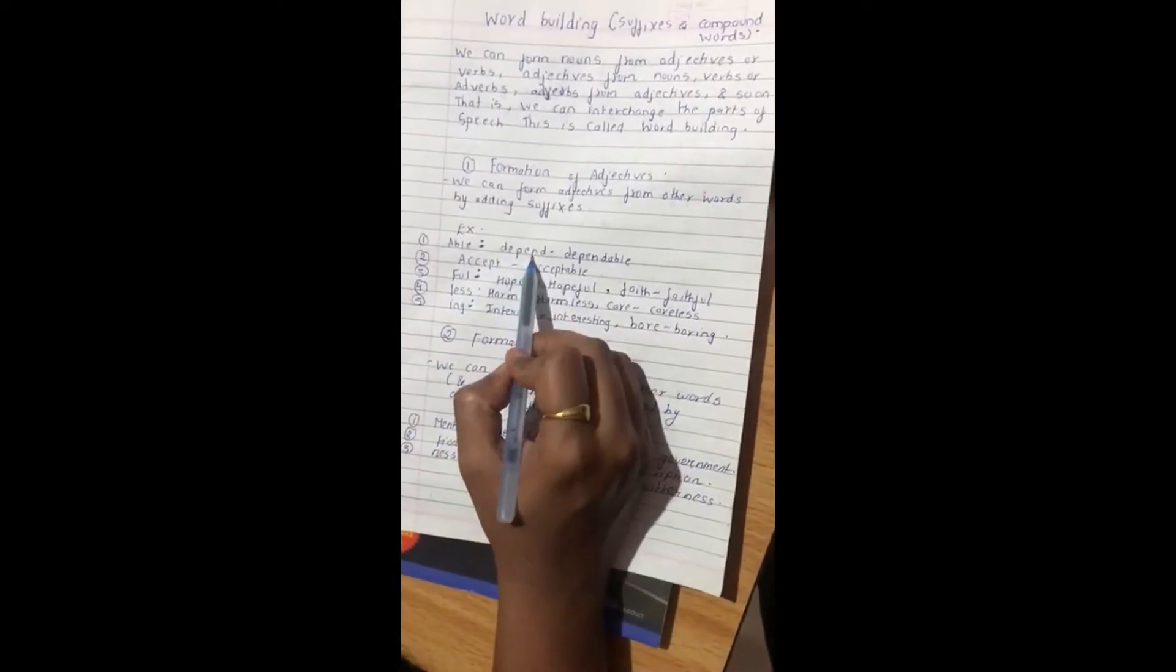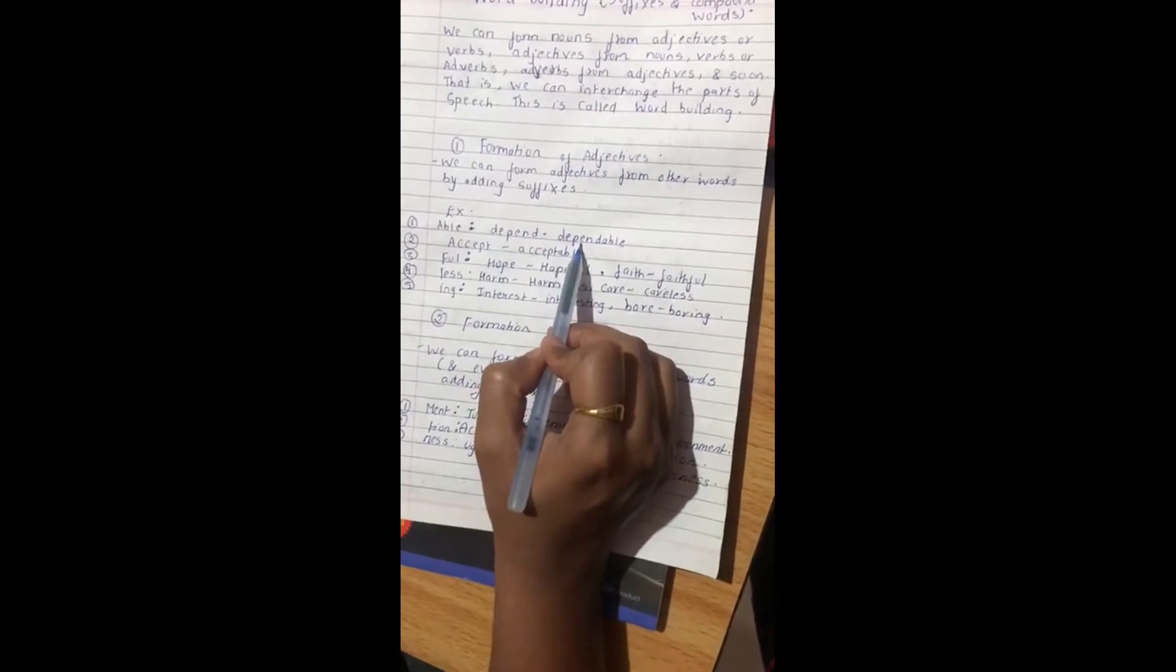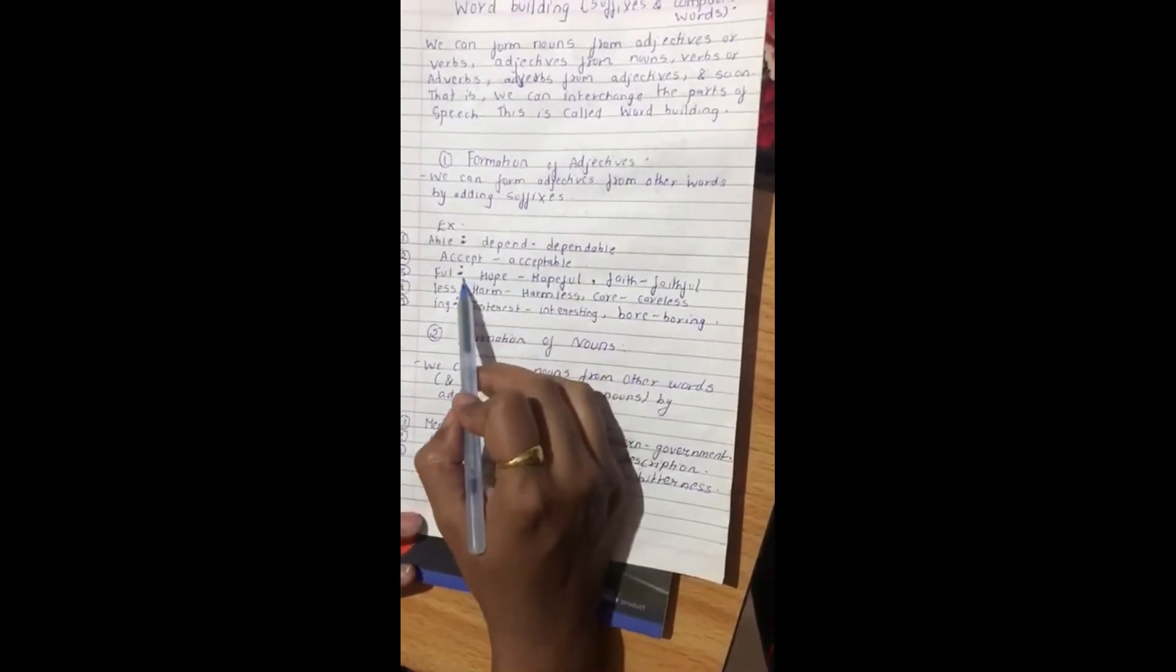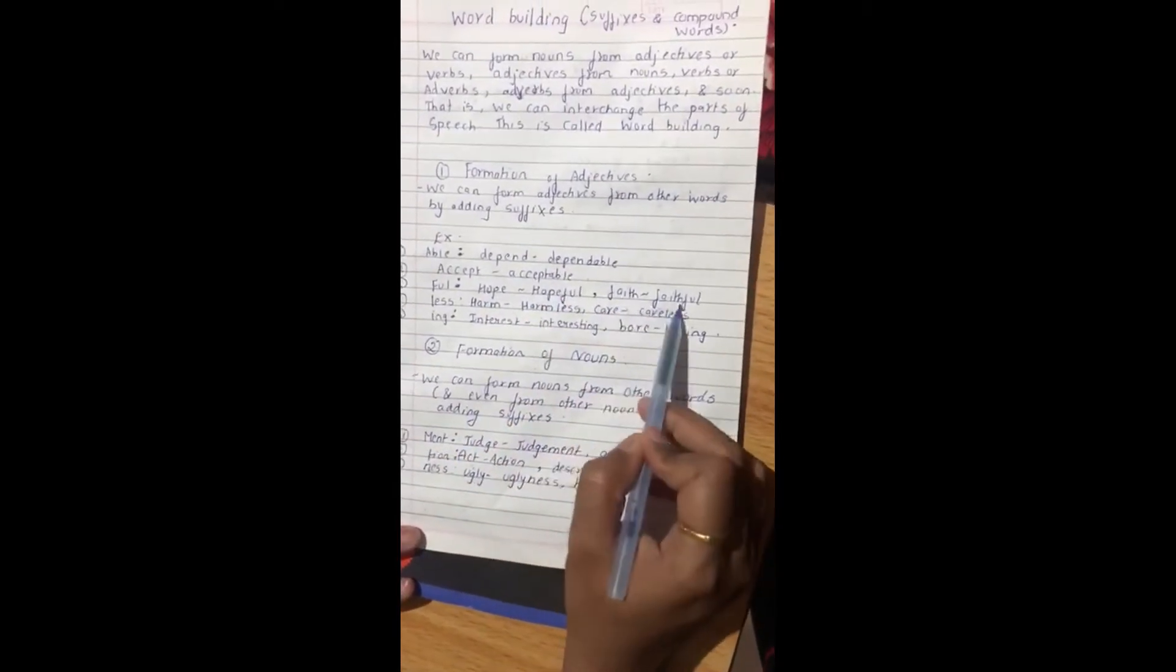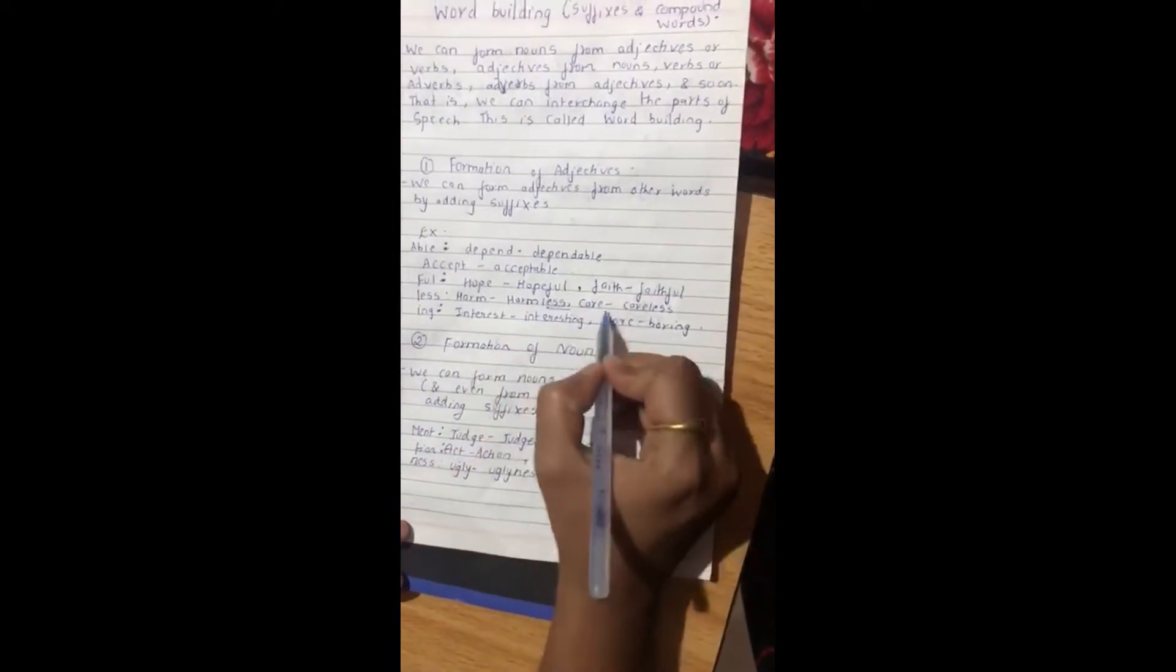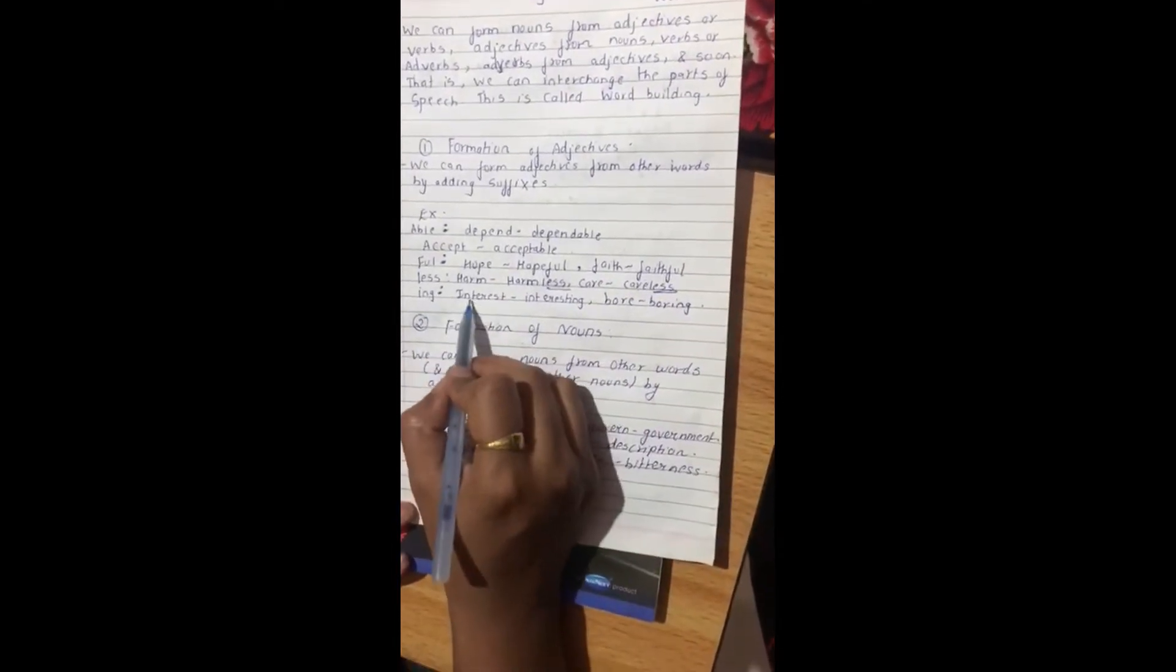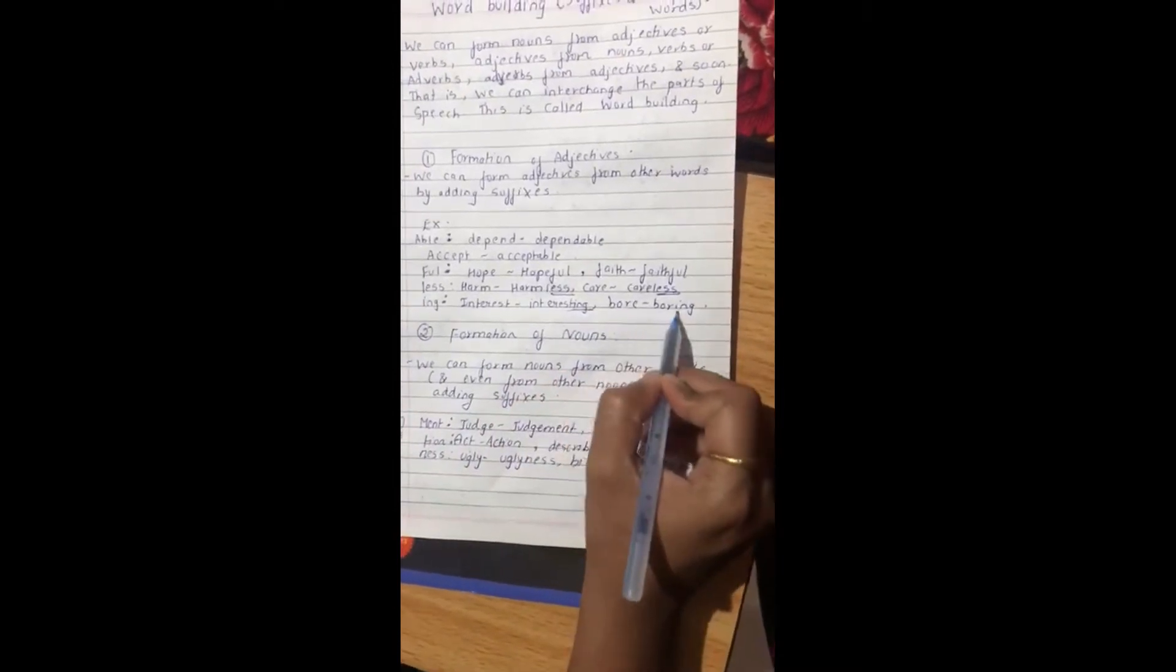For example, -able: dependent, able is added to dependent, so it is dependable. Accept, acceptable. -ful: hope, hopeful; faith, faithful. -less: harm, harmless; care, careless. -ing: interesting, boring.